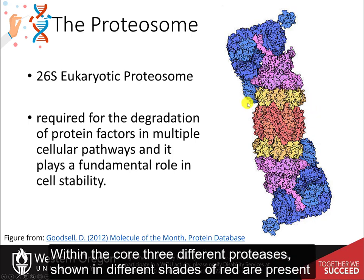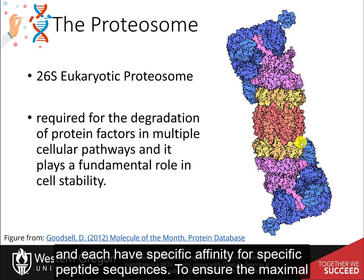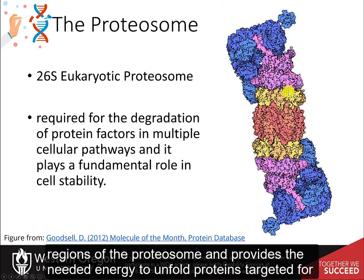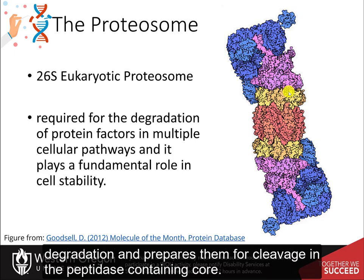Within the core, three different proteases, shown in different shades of red, are present and each have specific affinity for specific peptide sequences. To ensure the maximal breakdown of proteins that are targeted for degradation, ATP binds with the magenta regions of the proteasome and provides the needed energy to unfold proteins targeted for degradation and prepares them for cleavage in the peptidase-containing core.